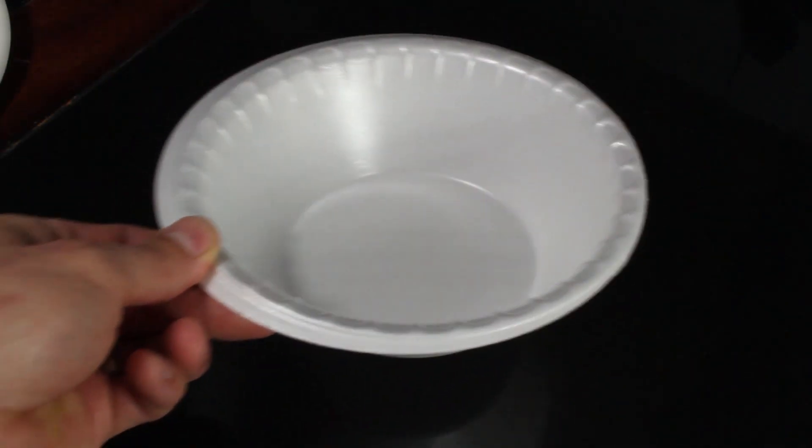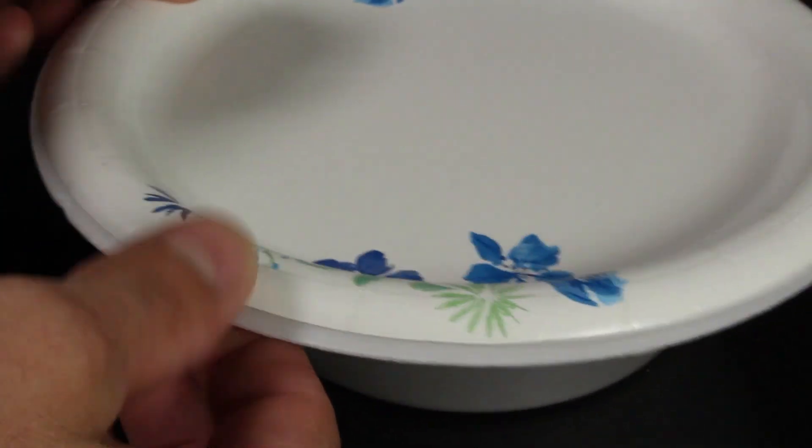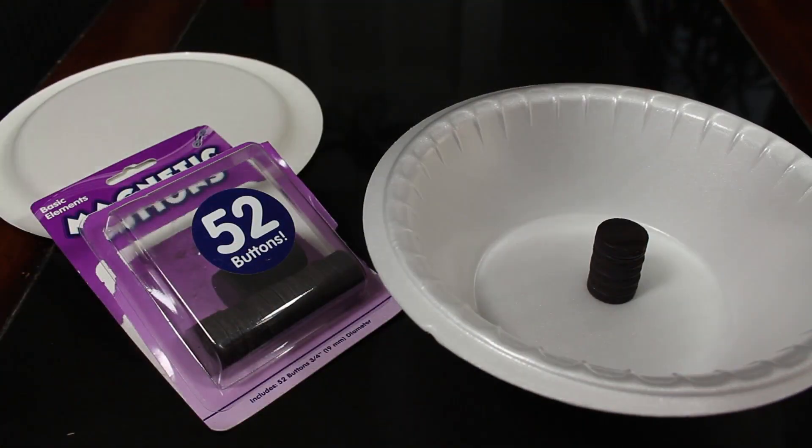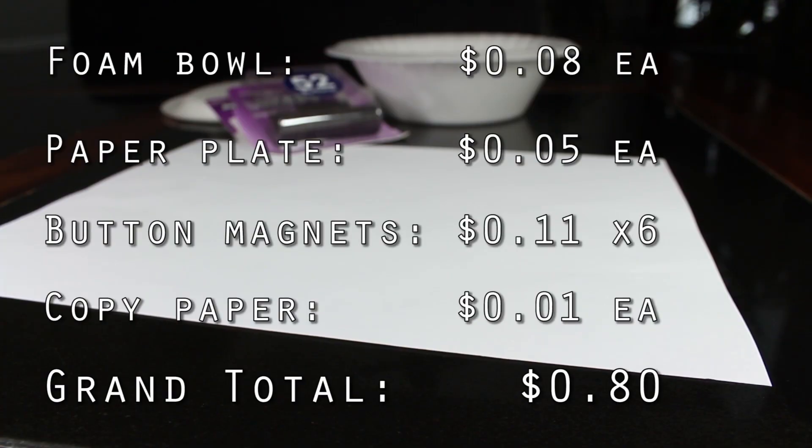We can use a foam bowl for the basket, an 8 and a half inch paper plate for the speaker cone, 6 button magnets, and a piece of printer paper to form the voice coil. This brings our prorated cost to about 80 cents for this soon to be speaker.